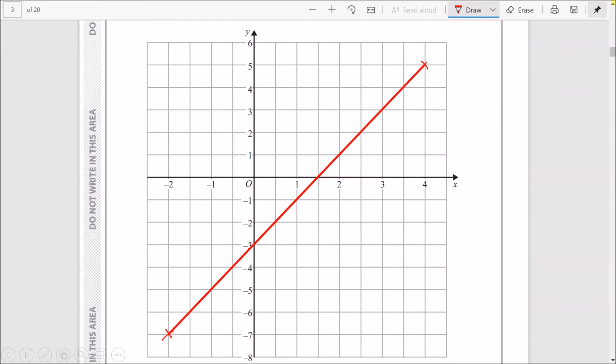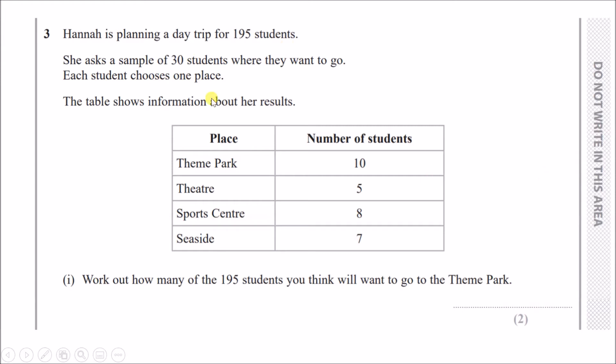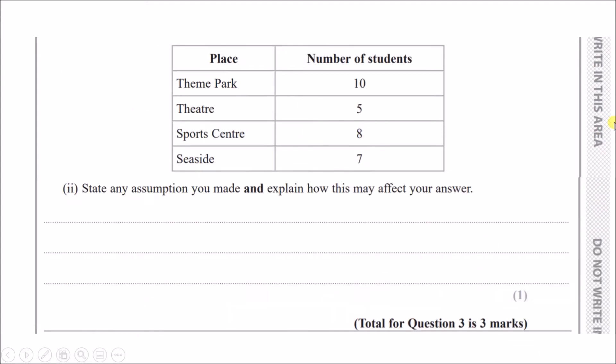Hannah's planning a day trip for 195 students. She asks a sample of 30 students where they want to go. The table shows her results with four different places. To work out how many of the 195 students will want to go to the theme park, look at the values: 10 out of 30 went, so one-third. If you had 195, one-third of 195—and 'of' means times—you get 65.